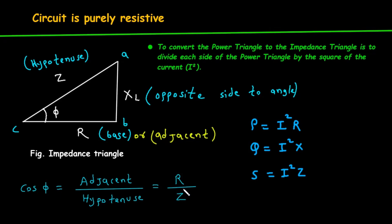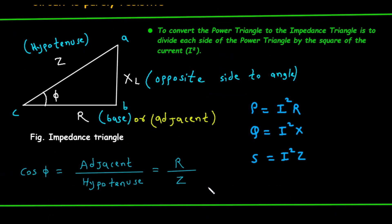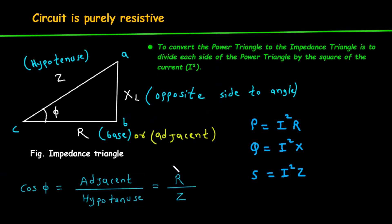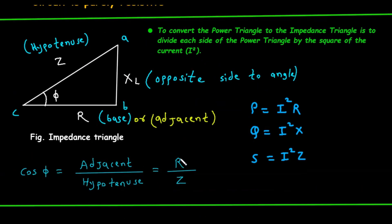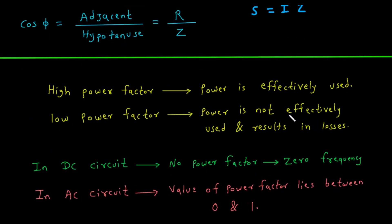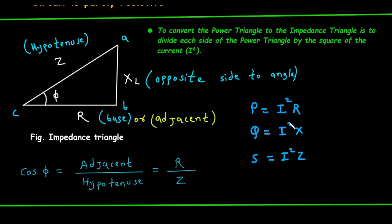This gives us another way to calculate the power factor. There's a direct link between the power triangle and the impedance triangle. You can convert the power triangle to the impedance triangle by dividing each side of the power triangle by I-squared. Real power, P, is equal to I-squared times R. Reactive power, Q, is equal to I-squared times X. Apparent power, S, is equal to I-squared times Z. If you take each of these equations and divide by I-squared, you are left with R, X, and Z, which are the sides of the impedance triangle.